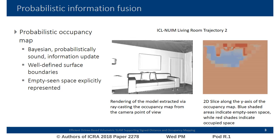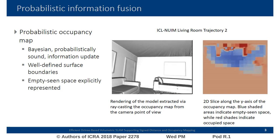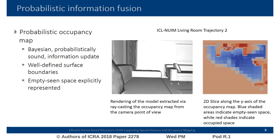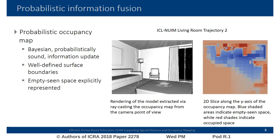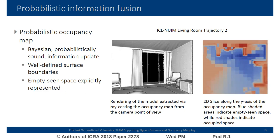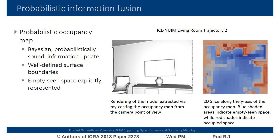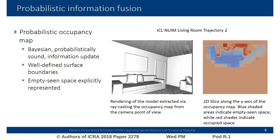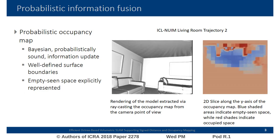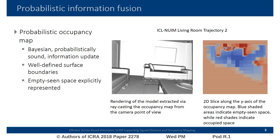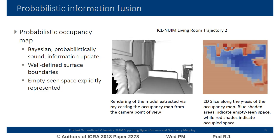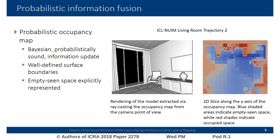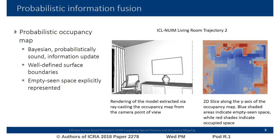We employ a probabilistic map representation, which allows for a fully Bayesian information update. Also, surface boundaries are well-defined, so fine-detailed geometry can be recovered via raycasting. Notice that in contrast to standard signed-distance function maps, empty scene space can be explicitly encoded, which is very valuable information for a variety of applications.